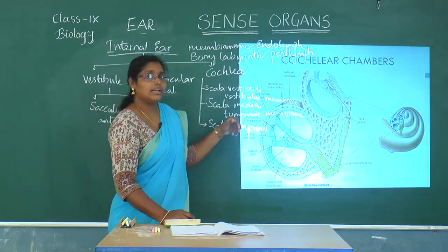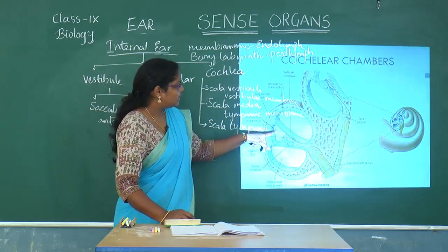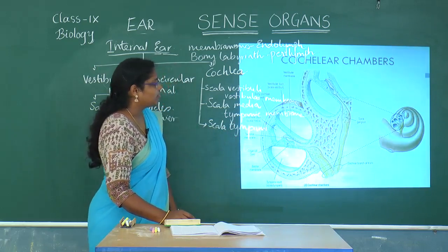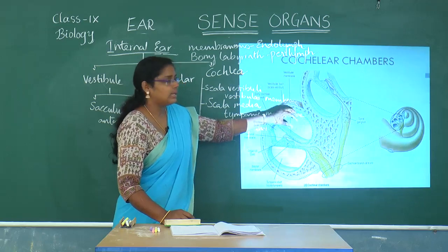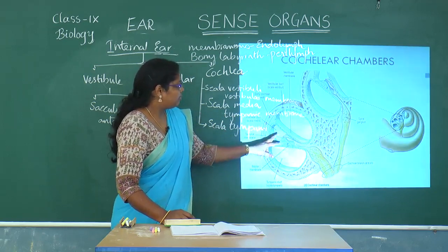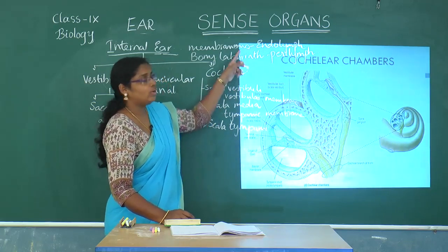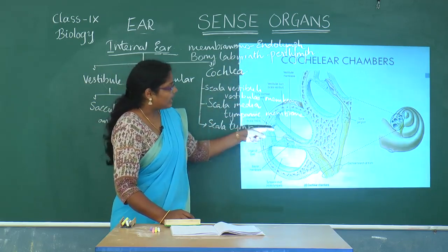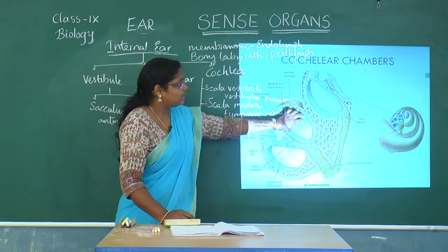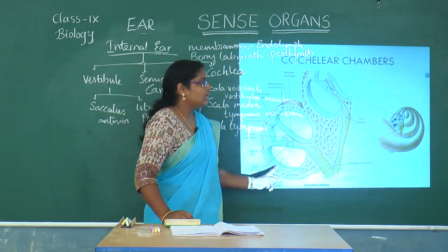The scala media is internally bounded by membranes where endolymph flows. The upper and lower chambers — scala vestibuli and scala tympani — carry perilymph, and since scala media is membranous, it is called the membranous labyrinth, while the other two chambers are surrounded by a bony structure called the bony labyrinth.